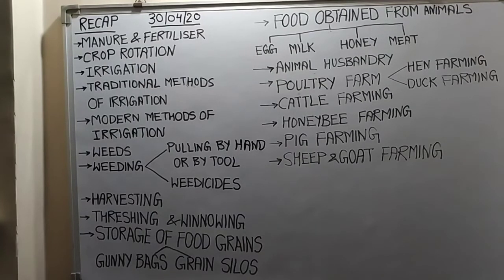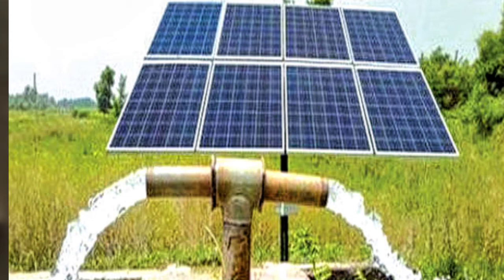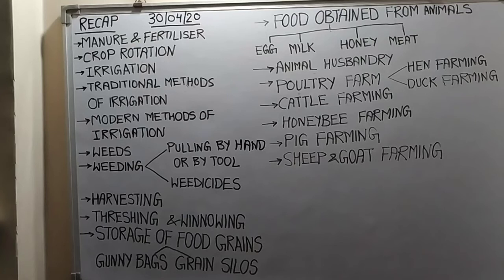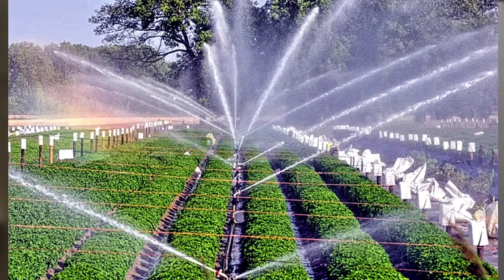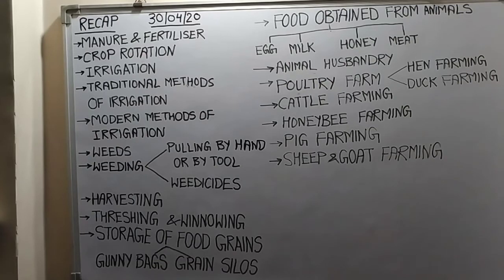Nowadays modern methods of irrigation are used. For example, the water pump — as you can see in the picture, the water pump can be powered by a solar panel, or by diesel, petrol, or electricity, depending on the area. The first modern method of irrigation is the sprinkler method, which is very useful for sandy soil or even for uneven land where sufficient water is not available. Perpendicular pipes are joined to a main pipe, and on the perpendicular pipes there is a rotating nozzle which rotates with the water pressure, sprinkling water all over the field as if it is raining.